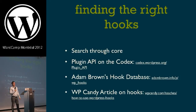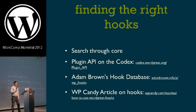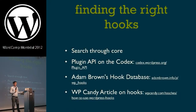It's important to find the right hooks when working with the hook system. The best way to find hooks is to search through core — find what file or moment in the WordPress execution you're trying to affect and find the hook you want. Other references include the Plugin API in the codex, Adam Brown's hooks database, and the WP Candy article on hooks, which is more of a teaching tool. All these slides are available at slides.jkiddish.com, so don't feel like you need to write all these resources down.